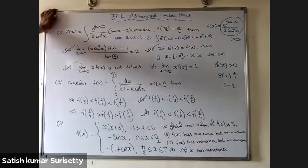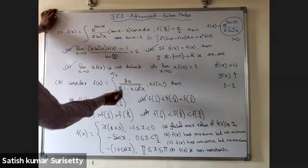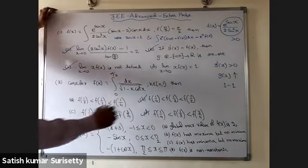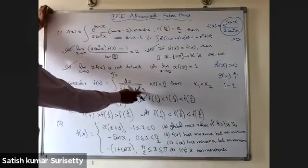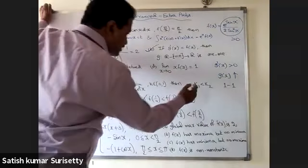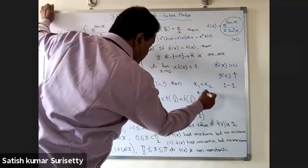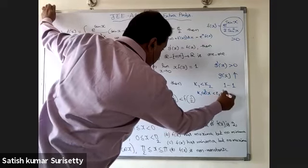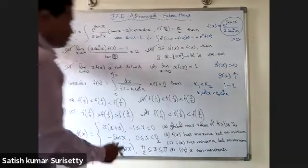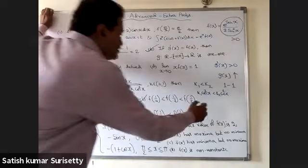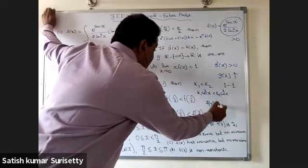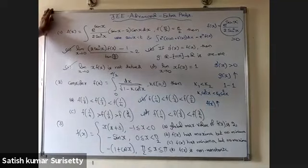For the second problem, instead of solving for f(k) directly, apply inequality properties. Take k₁ < k₂; then k₁ cos²x < k₂ cos²x. Multiply by −1, add 1, take square root and reciprocal, then integrate — you can conclude f(k) is increasing. So the correct options are B and D.